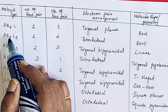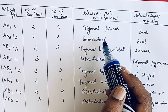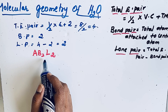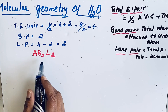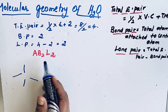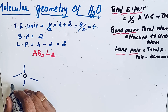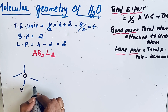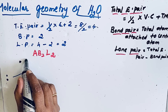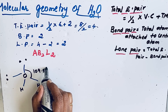If the molecular type is AB₂L₂, then the electron pair arrangement is tetrahedral. The electron arrangement is tetrahedral, with oxygen at the central position, two hydrogen atoms, and two lone pairs. The bond angle for a tetrahedral arrangement is 109.5 degrees.